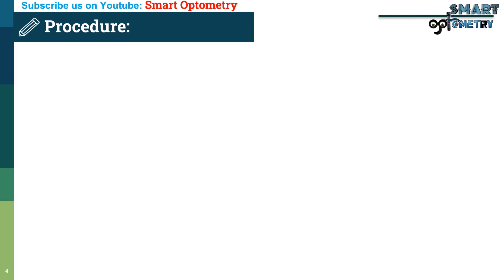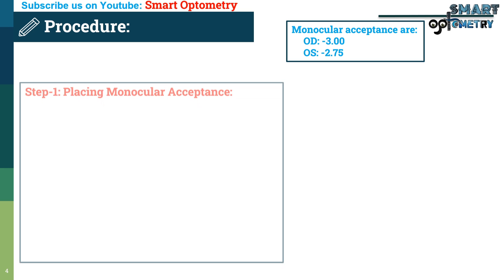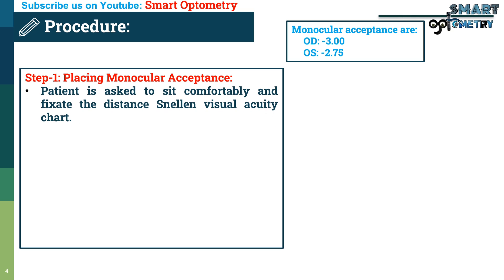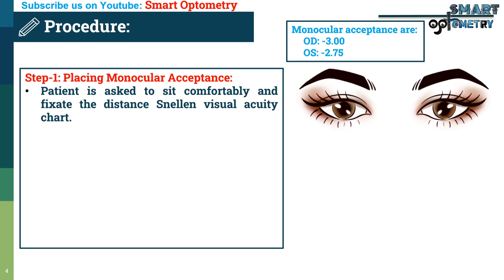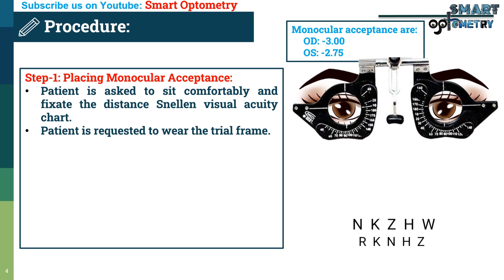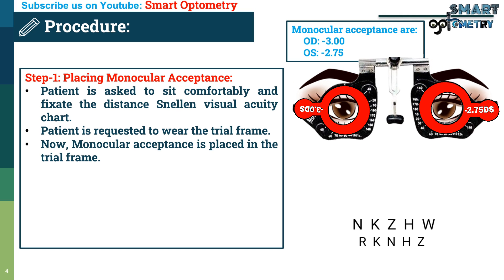Now the procedure of the test. Let's take an example for understanding. Monocular acceptance: right eye minus 3, left eye minus 2.75. Step 1 — Placing monocular acceptance: the patient is asked to sit comfortably and fixate the distance channel visual acuity chart. The patient is requested to wear the trial frame and monocular acceptance is placed in it.